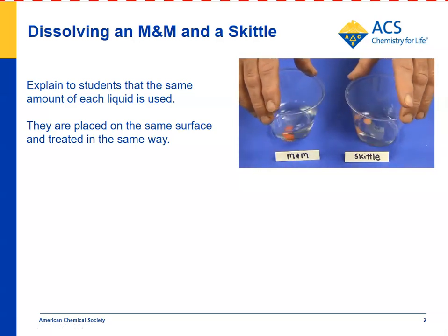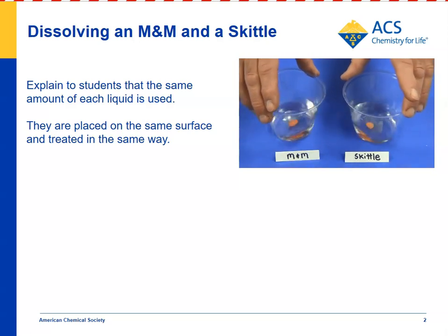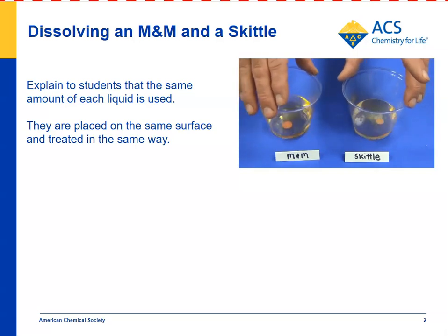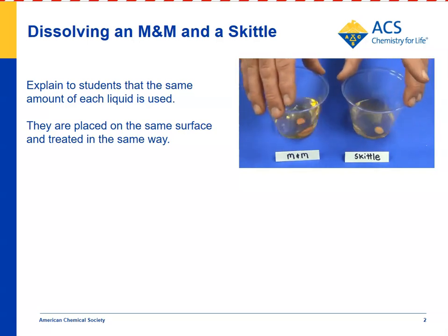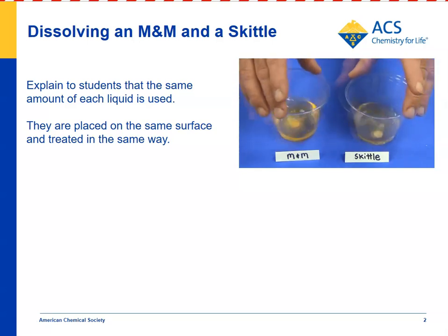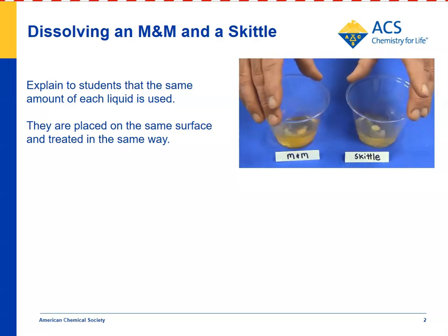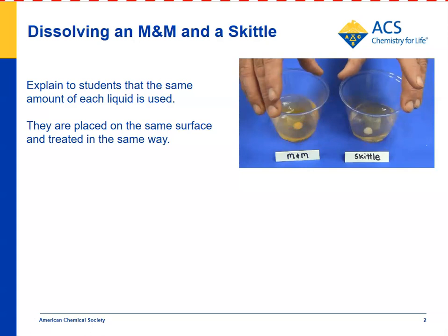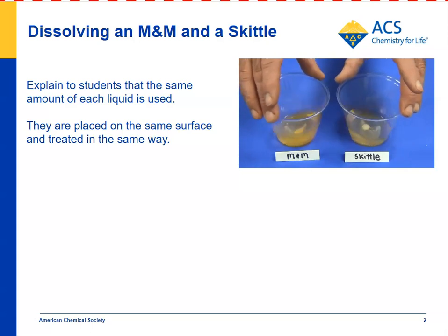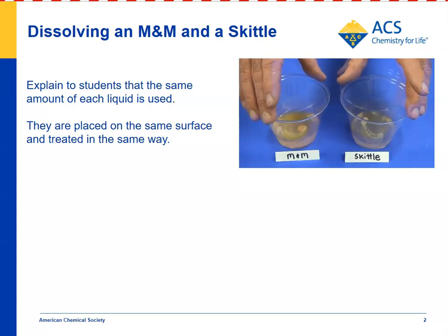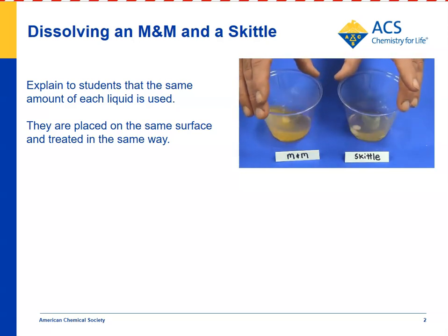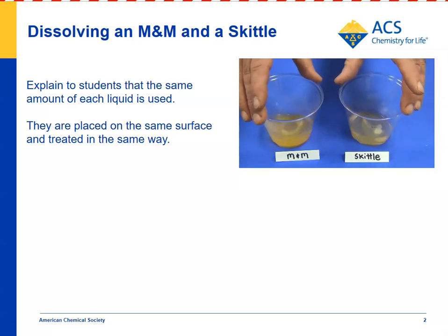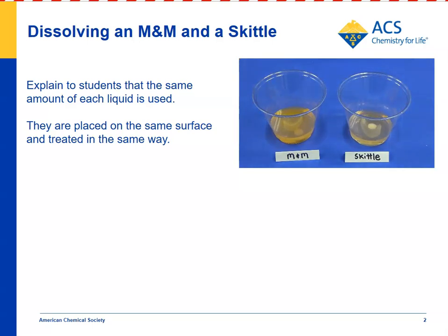You would have students put the M&M and Skittle in the water at the same time and begin to swirl. Of course, you want them to swirl similarly — you wouldn't want one to swirl vigorously and the other to do it gently. You can stop during the swirling and ask students for observations. We've obviously time-lapsed this a bit so that it doesn't take quite as long to do the swirling on this video as it does in real life.